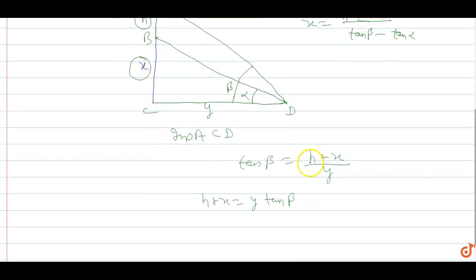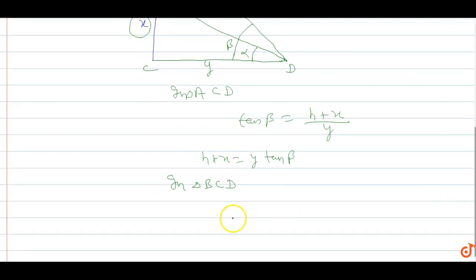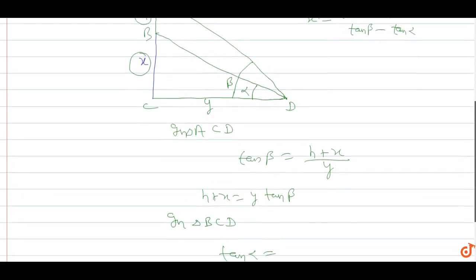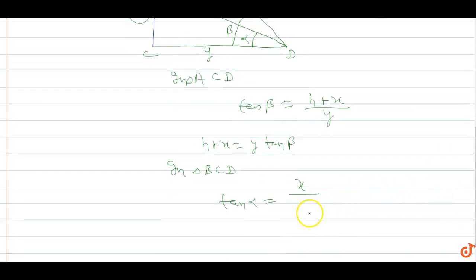In triangle BCD, tan alpha equals the altitude BC, which is x, upon the base CD, which is y. Then x equals y tan alpha.